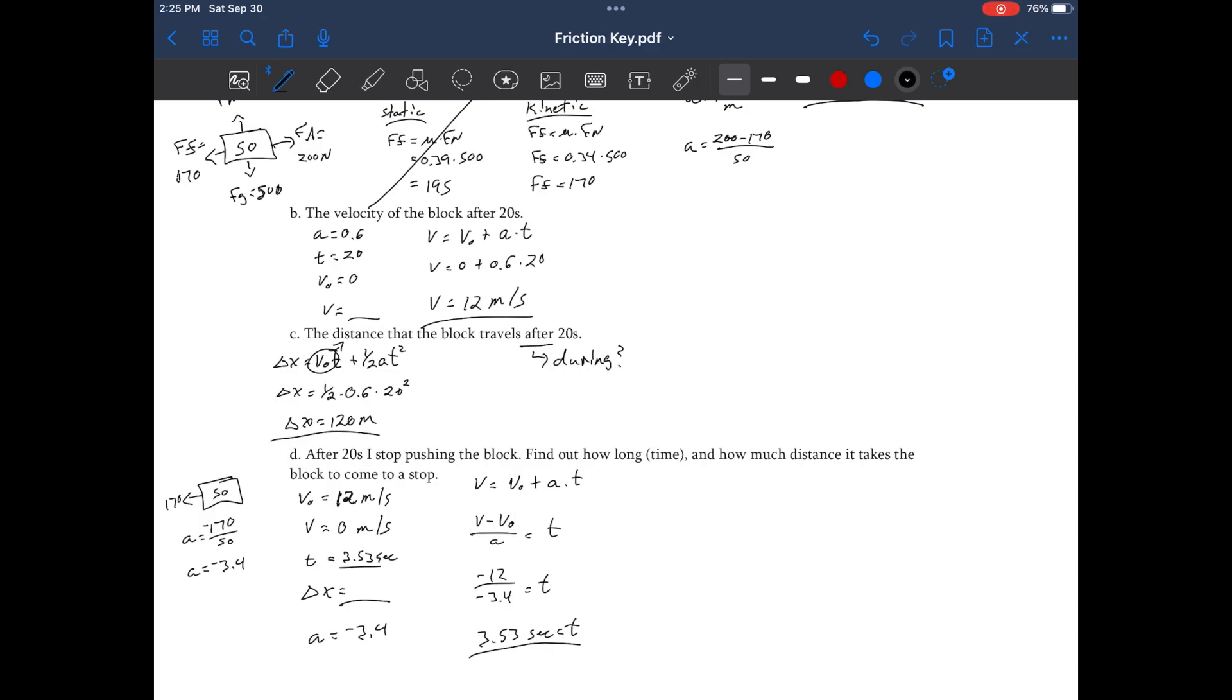And if I don't want to use that time, just in case there's an error, we could use the V² = V₀² + 2a·Δx formula to solve for delta x. If I subtract V₀² to the other side, then divide both sides by 2a, I would get V² minus V₀² divided by 2a is delta x. That's 0² minus 12² over 2 times negative 3.4, essentially negative 144 divided by negative 6.8. 21.18 meters is the displacement it takes for it to stop after we stop pushing it.